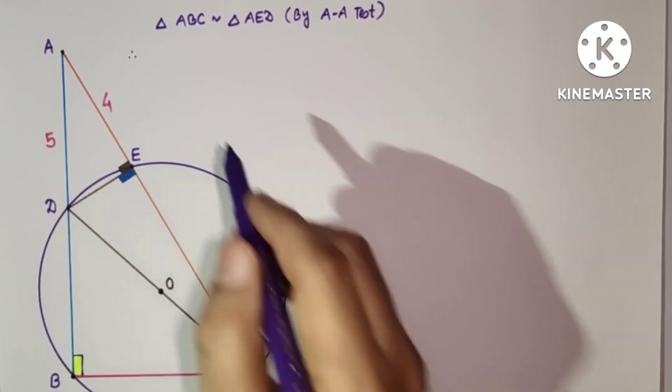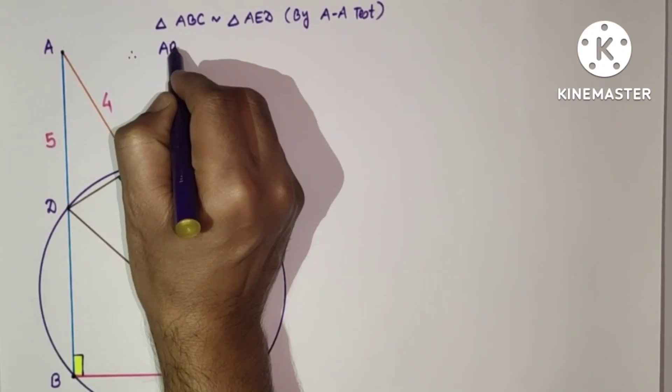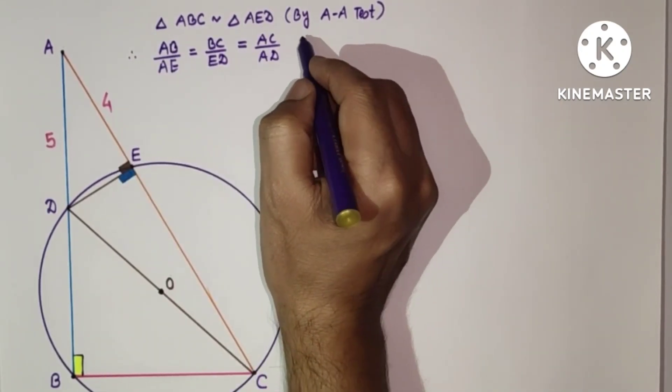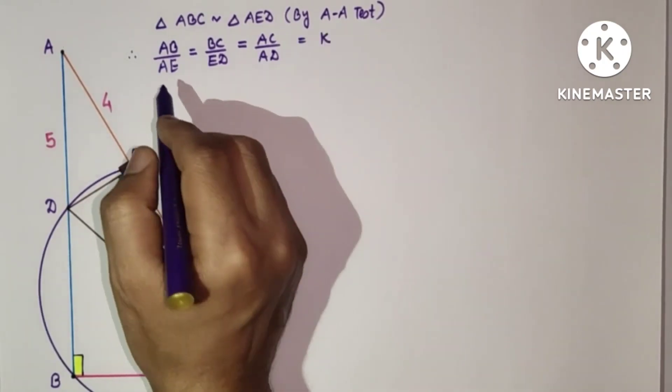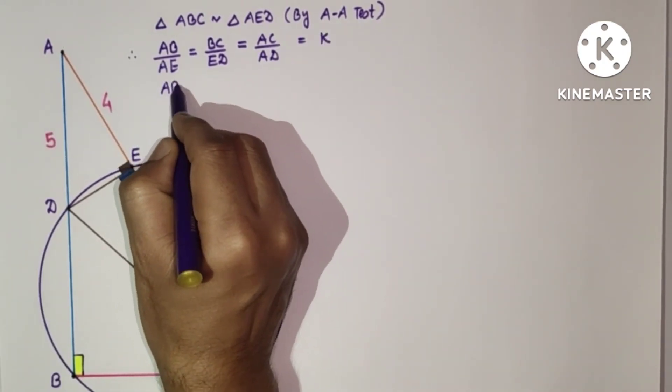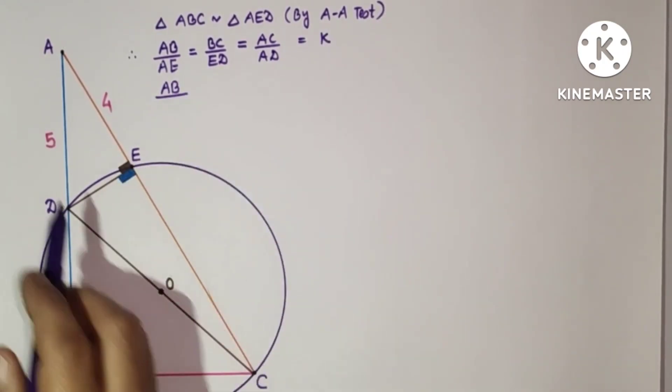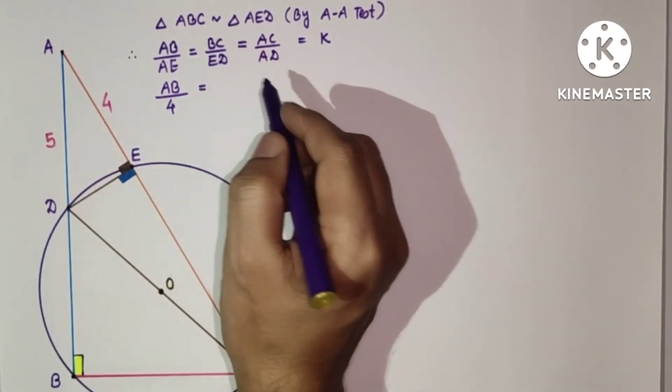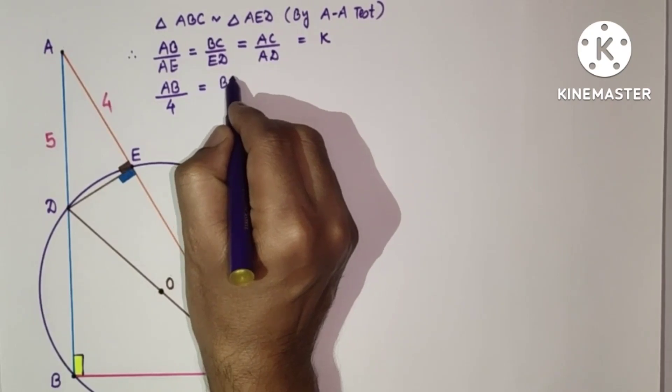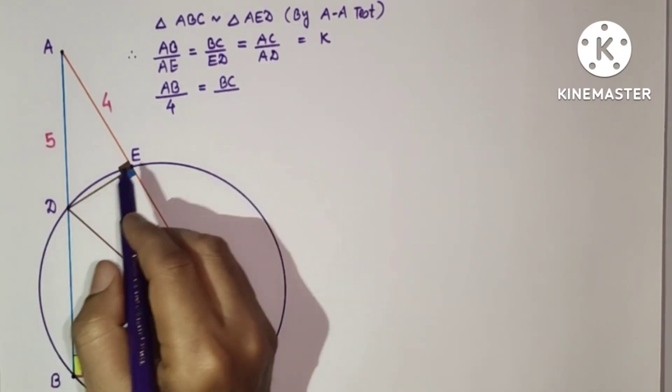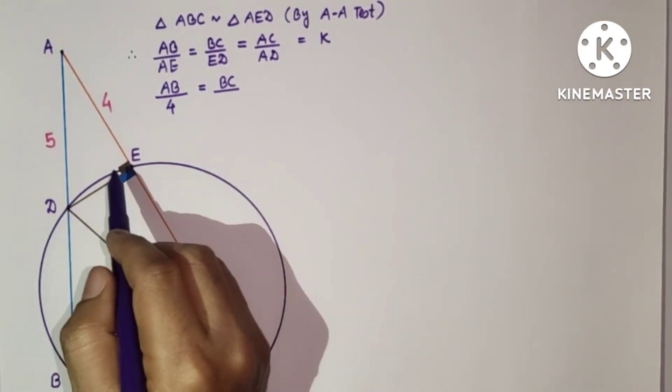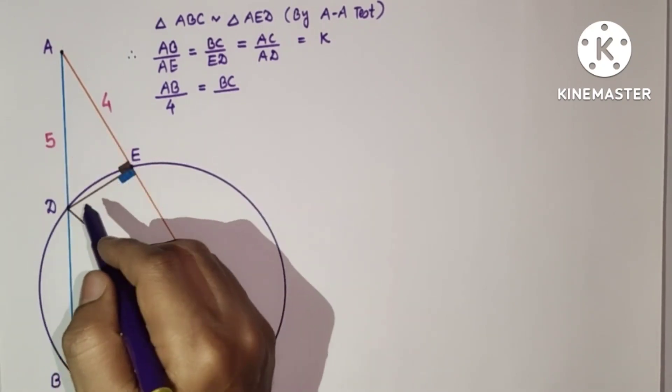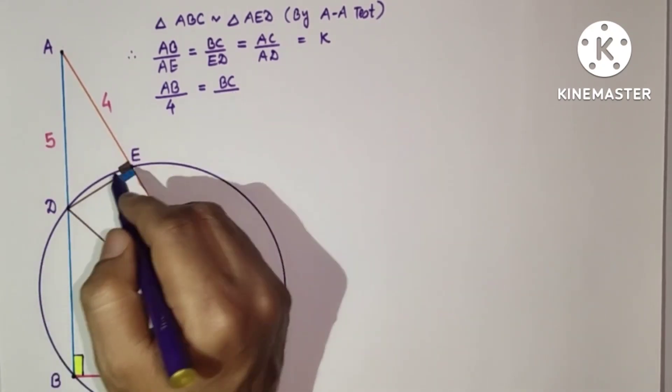So we can say that AB by AE, BC by ED, and AC by AD each equal K. AE is 4, ED we don't know, but by the 3, 4, 5 Pythagorean triplet, DE will be 3 by Pythagoras theorem, so DE is 3. AC upon AD is 5.